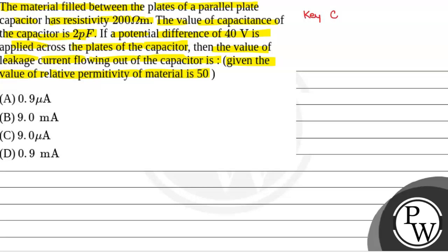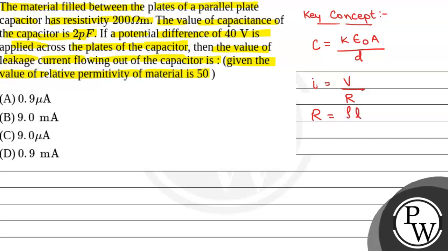We will see what will be the key concept used to solve this question. The key concept will be capacitance C is equal to K·ε₀·A divided by D, where K is the relative permittivity of material, ε₀ is permittivity in free space, A is the area of capacitor plates, and D is the distance or length between capacitor plates. Also, current I is equal to V divided by R from Ohm's law, and resistance R is given by ρ·L divided by A.